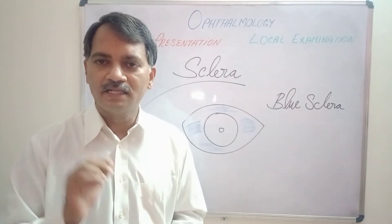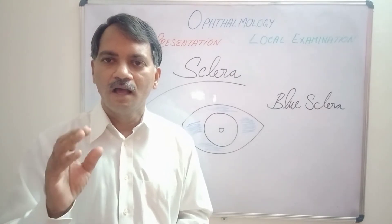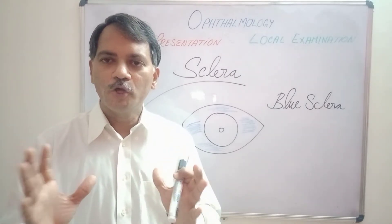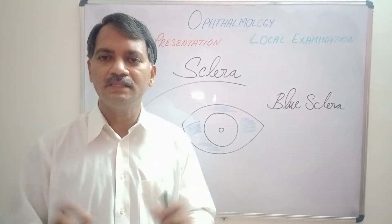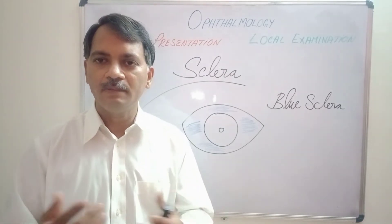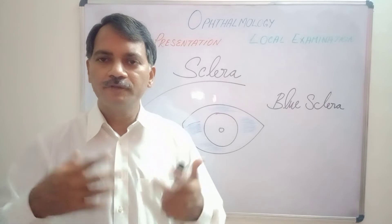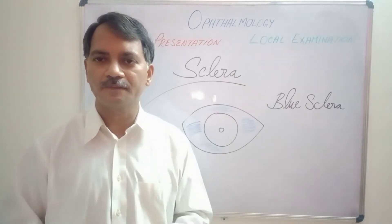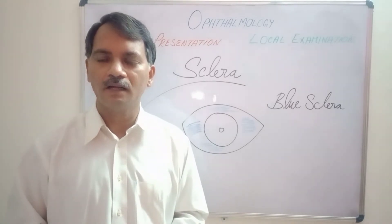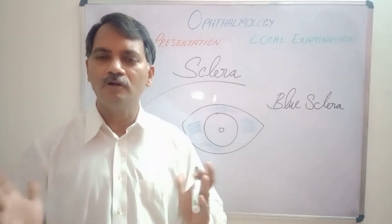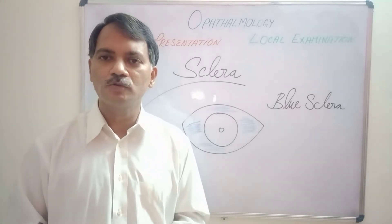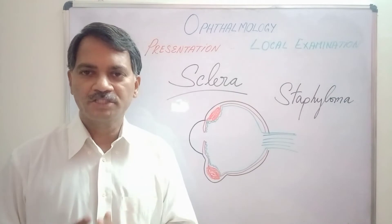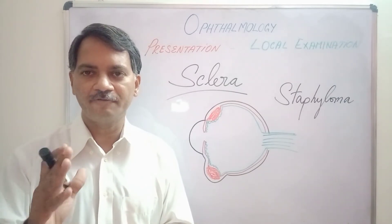The next conditions causing blue sclera are high myopia, where the eyeball will be bigger and the sclera will be thin, mimicking a blue sclera; buphthalmos — that is congenital glaucoma — where the eyeball will be very big, and thinning out of the sclera once again leads to blue sclera. Another most important condition of the sclera is staphyloma.